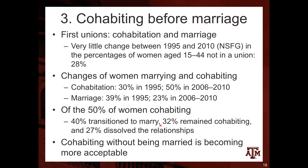Of the 50% of women cohabiting: 40% transition into marriage, 32% remain cohabiting, and 27% dissolve their relationships. The highest percentage transition to get formally married, some remain cohabiting, and some split. Cohabiting without being married is becoming more acceptable in American society, and that percentage has been increasing in recent decades.